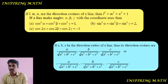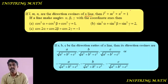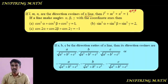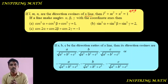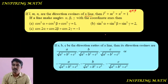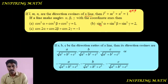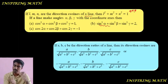This formula is very important. If l, m, n are the direction cosines of a line, then l² + m² + n² = 1. That is, cos²α + cos²β + cos²γ = 1. It follows that sin²α + sin²β + sin²γ = 2.